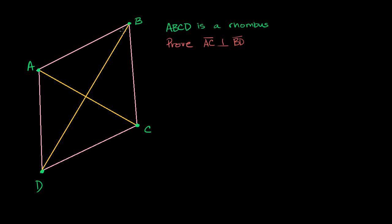We're told that quadrilateral ABCD is a rhombus. What they want us to prove is that their diagonals are perpendicular, that AC is perpendicular to BD.